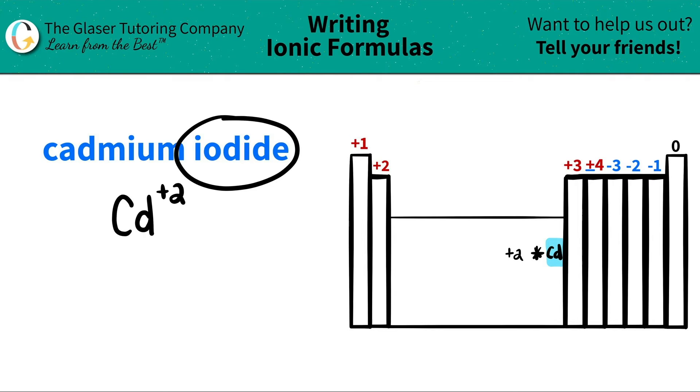Now I have iodide. I see that I have an IDE ending, which means that it's probably going to be a non-metal somewhere. So I'm looking for the IOD, right, for the iodide. And I see it's right here. Iodine is an I, and it's a halogen.